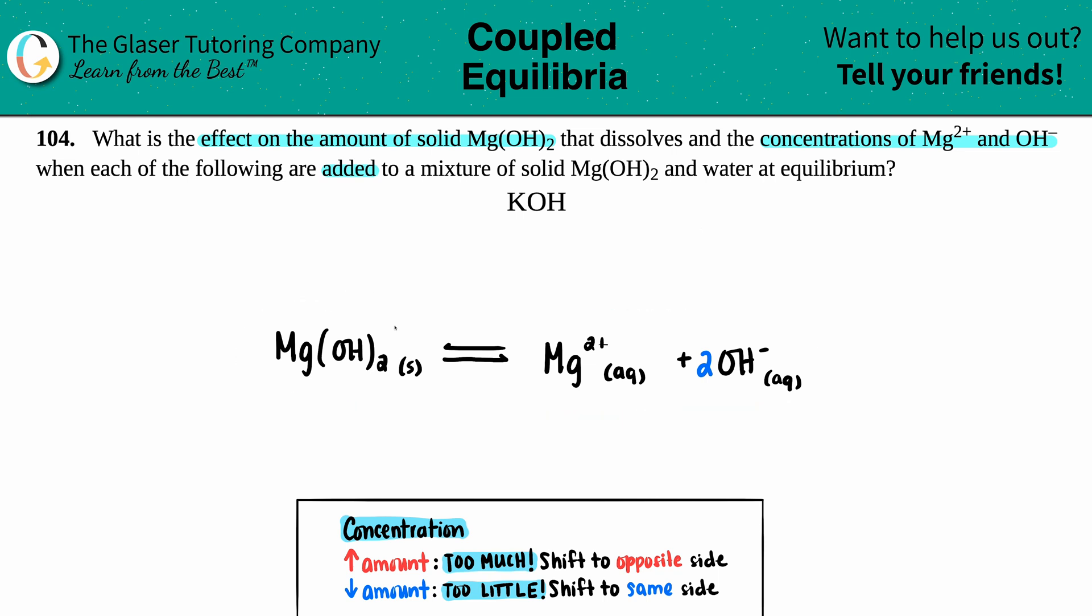Now I already wrote the balanced equation for solid Mg(OH)2 going into its two ions, Mg2+ and OH-. If you have any questions as to how this was made, check out number 104A. So if you want to figure out how this was put together, just check out 104A and the answer will be there. But we're going to get right into it.